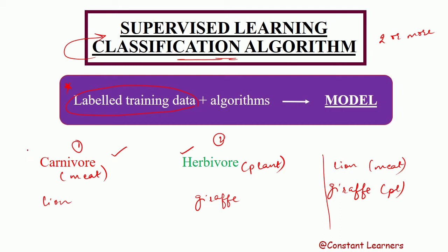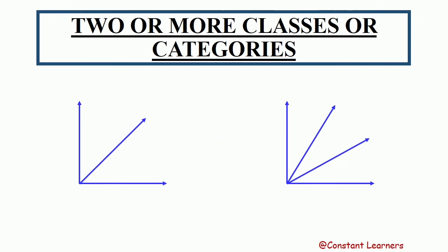The categories or classes into which the dataset is classified are also known as targets or labels. The output of a classification algorithm is not a solution to a problem or a numerical value — rather, it is a category or a class, because we are classifying or categorizing the data.